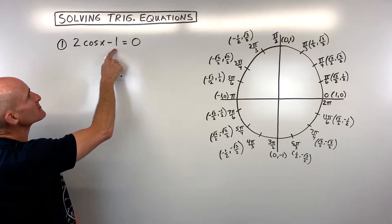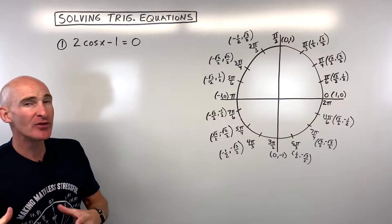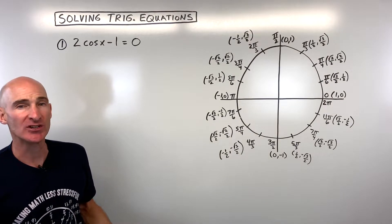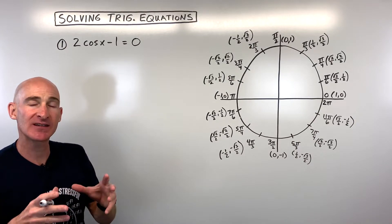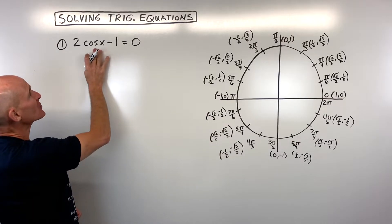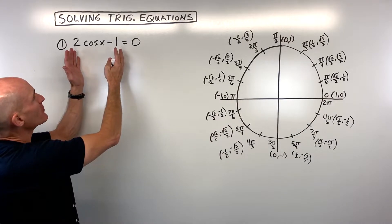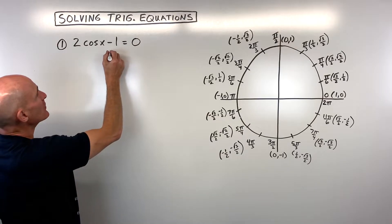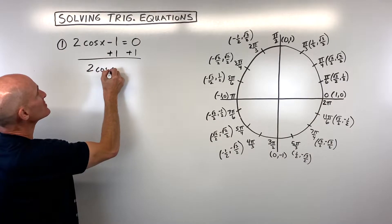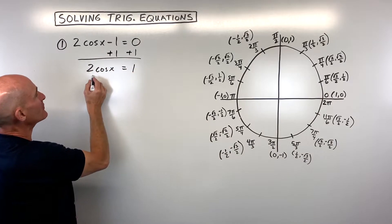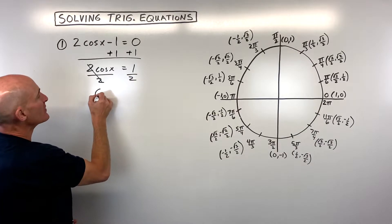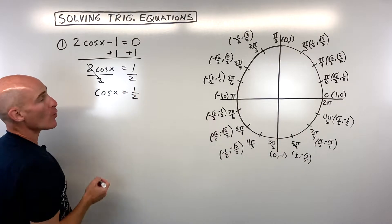For example number one, we have two cosine x minus one equals zero. You can think about this just like solving a regular algebra equation, but instead of getting x by itself, think about isolating that particular trig function — in this case, cosine. Add one to both sides, giving us two cosine x equals one, then divide both sides by two. Now we have cosine of x equals one half.